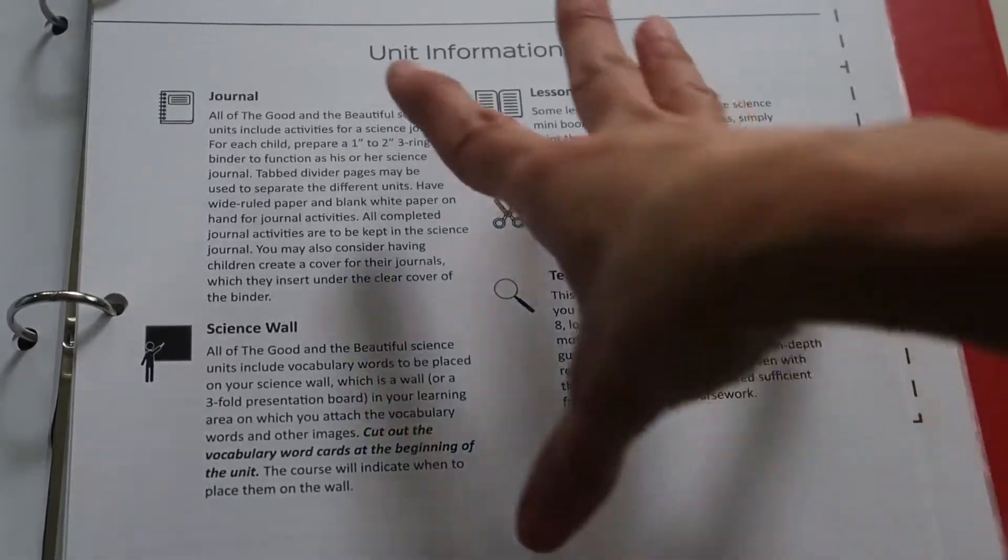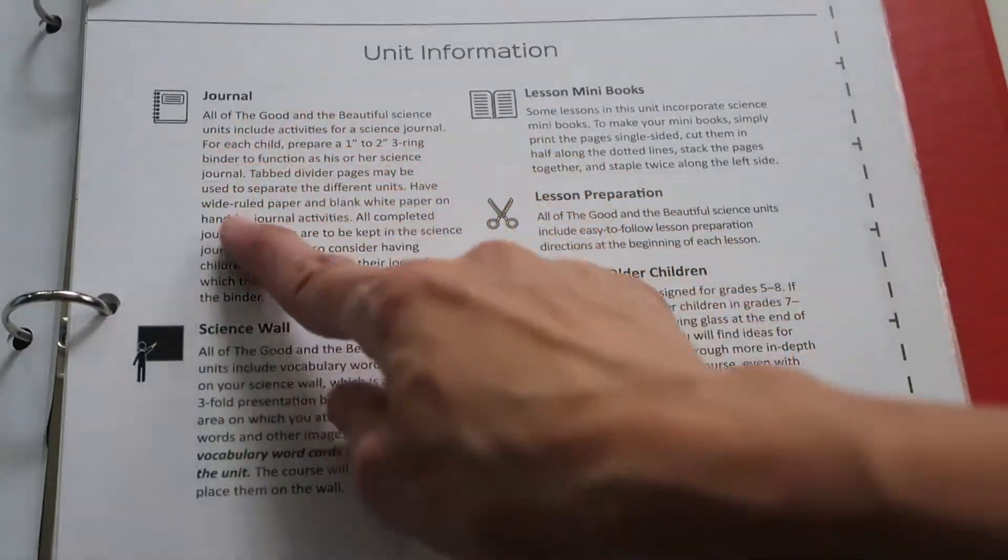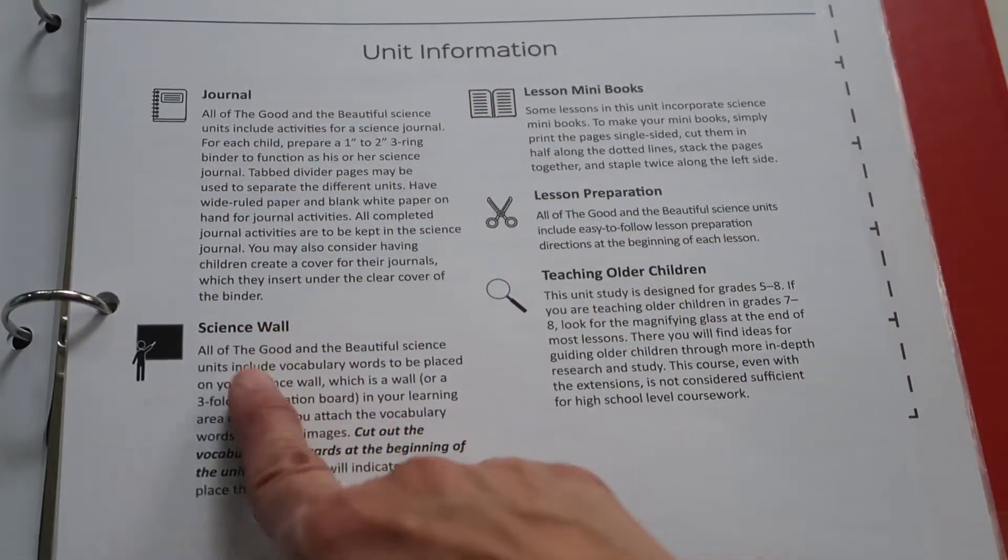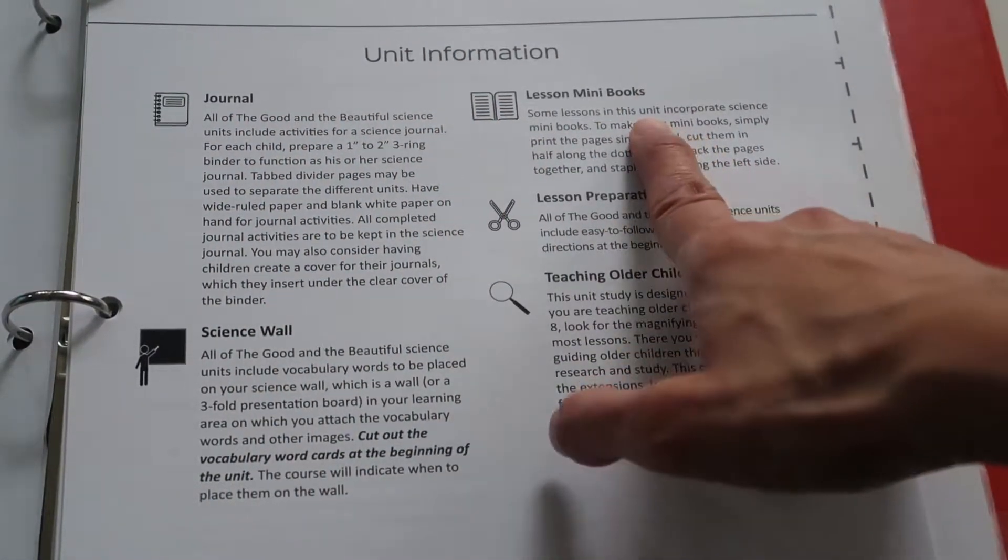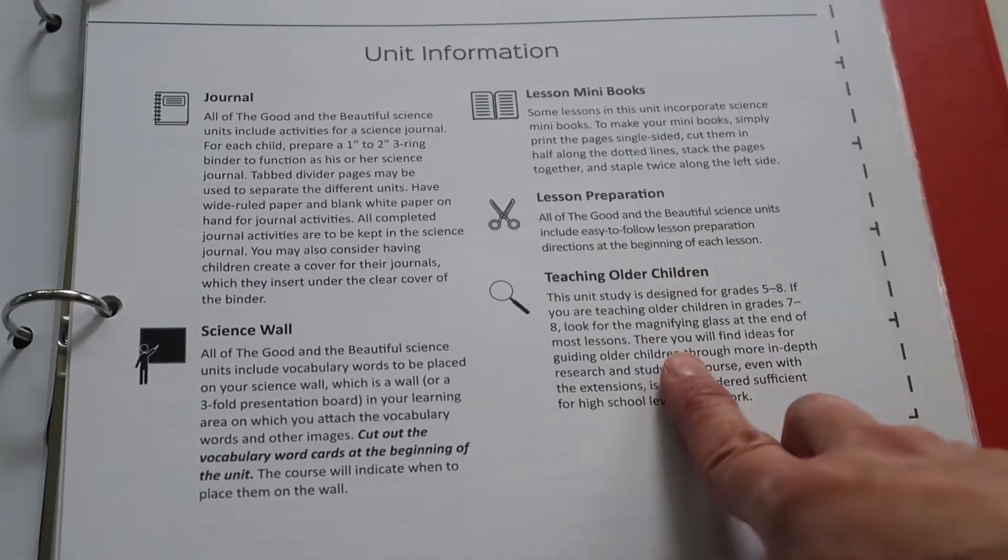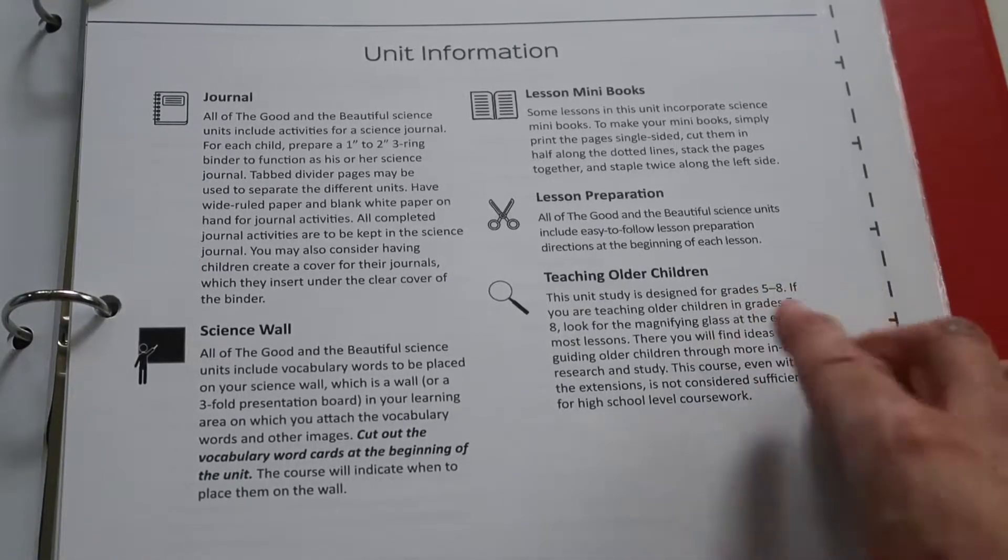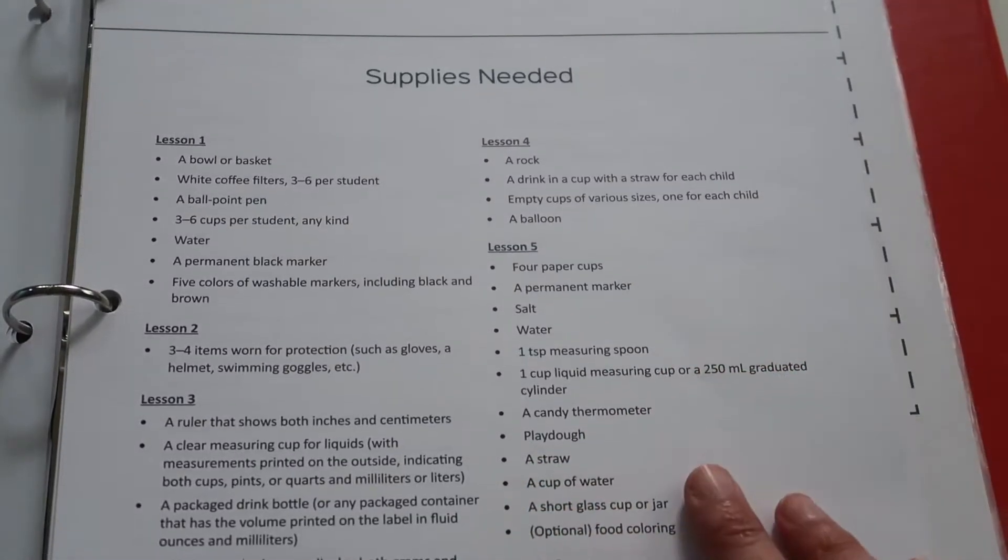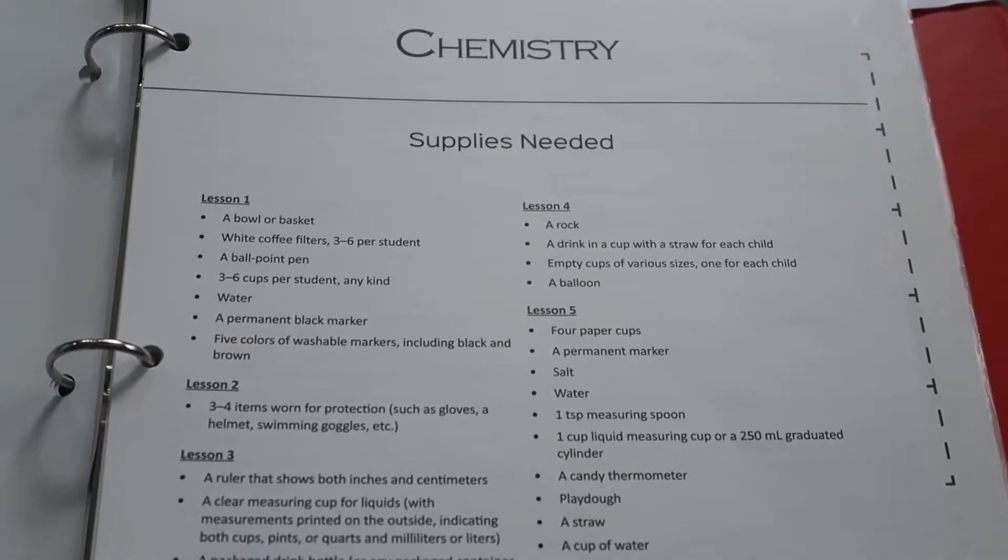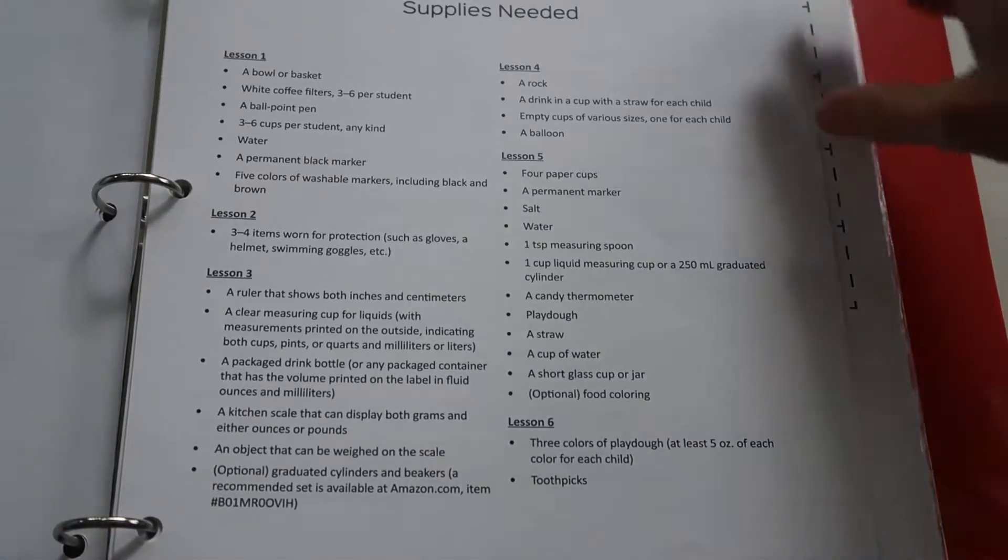So at the beginning of each course you have your unit information. It tells you how to prepare a journal for your child, how to prepare a science wall, how to set up the mini books, any lesson preparation, and what to do if you're teaching children, older children like in grades 7th and 8th. You also have a supplies needed page which tells you every lesson and all the supplies that are going to be needed for that lesson.